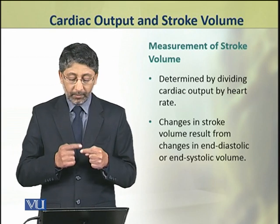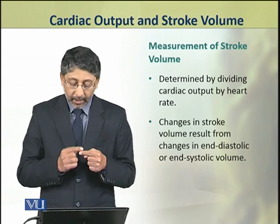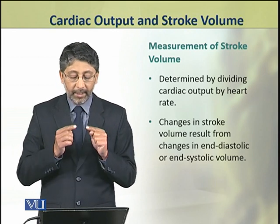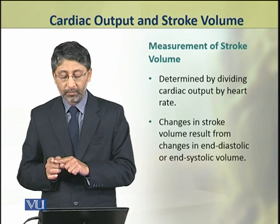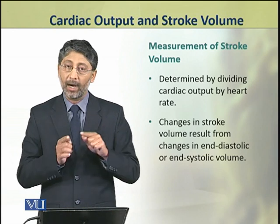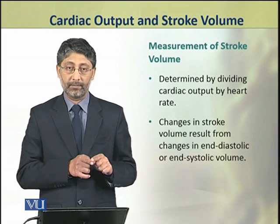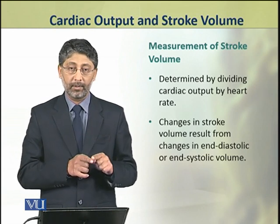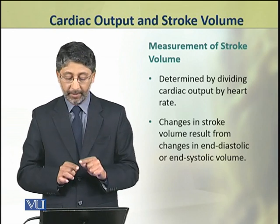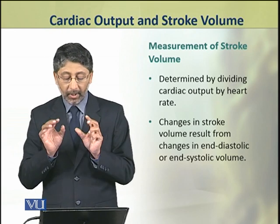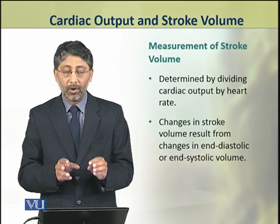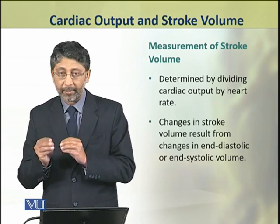The stroke volume is determined by dividing cardiac output by heart rate. Mathematically, when we calculate it, we divide the cardiac output by heart rate.